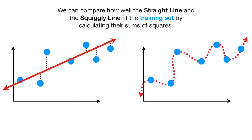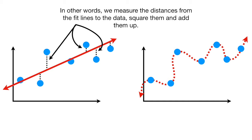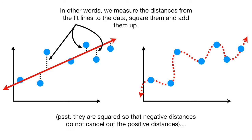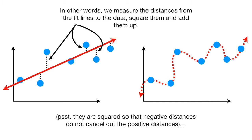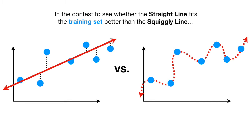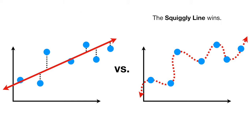We can compare how well the straight line and the squiggly line fit the training set by calculating their sums of squares. In other words, we measure the distances from the fit lines to the data, square them, and add them up. They are squared so that negative distances do not cancel out positive distances. Notice how the squiggly line fits the data so well that the distances between the line and the data are all zero. In the contest to see whether the straight line fits the training set better than the squiggly line, the squiggly line wins.